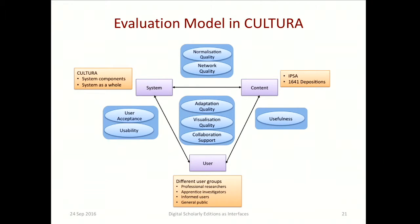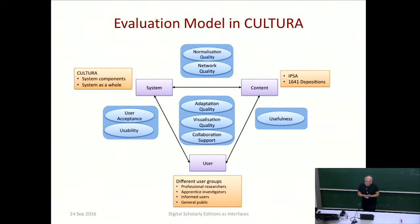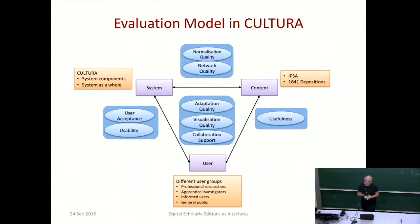The three rectangles are the main entities: the system, the user, and the content. The evaluation questions are formulated around these axes. For example, the axis between user and system raises questions about use acceptance and usability. The axis between user and content puts the question of the usefulness of the content. The axis between system and content asks for normalization quality and network quality. All of them together raises questions about adaptation quality, visualization quality, and collaboration support — the main evaluation questions identified in the Kultura project.